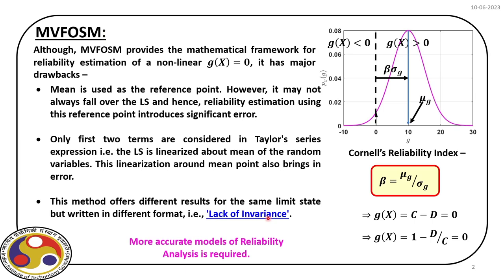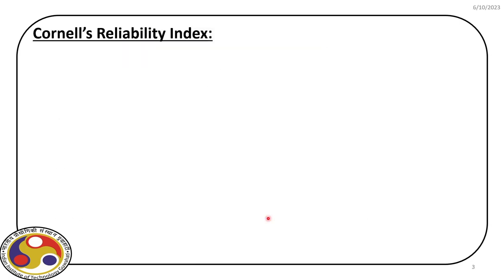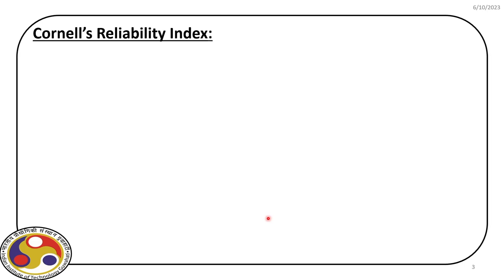All these drawbacks motivated us to look into more accurate models of reliability analysis. That is the reason we are going to find out how we can address all these issues and more accurately estimate the reliability index. For that, let us start again from the definition proposed by Cornell: gx equal to 0, that is c minus d equal to 0.